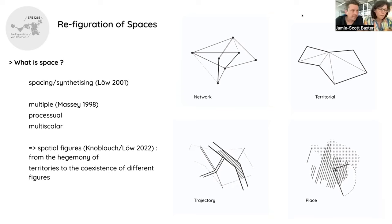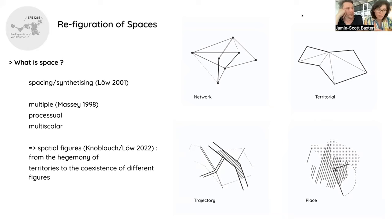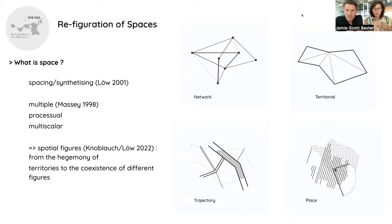To think the multiplicity of space, we find the heuristic of spatial figures quite useful. Space doesn't take only the shape of the territory following the logic of bordering — that would be the major spatial definition inherited from modernity. But it can also take the shape of a network following a logic of association, or the figure of a place following a logic of overlay, or the figure of a trajectory stressing a logic of crossing through. This makes spatial understanding more multiple and complex.